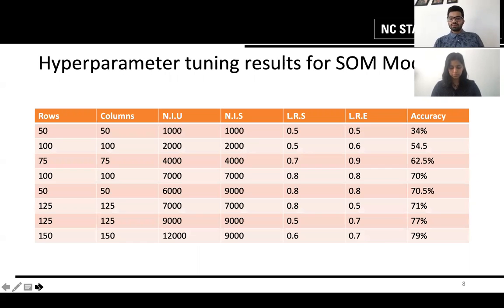The results of the model along with the hyperparameter tuning are as follows. I will briefly explain the hyperparameters. The rows is the number of rows in the SOM map as the columns are the number of columns. NIU stands for number of iterations of the unsupervised SOM and similarly NIS for the number of iterations of the supervised SOM.